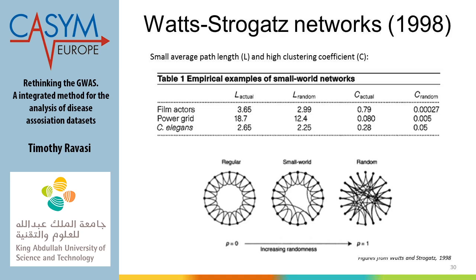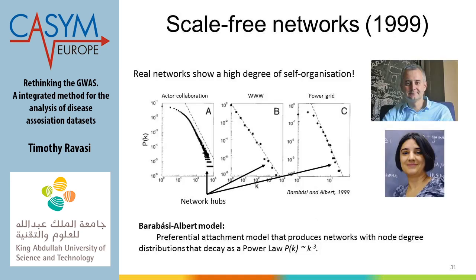A few years later, Barabási and Albert, building on these three networks and also the World Wide Web, noticed something different from the random network model. Real networks show a high degree of self-organization — they are small-world and have high clustering coefficients — but also, when you plot on a log-log scale the number of interactions per node versus the probability, instead of showing a Poisson distribution, they show a power law — a long tail.